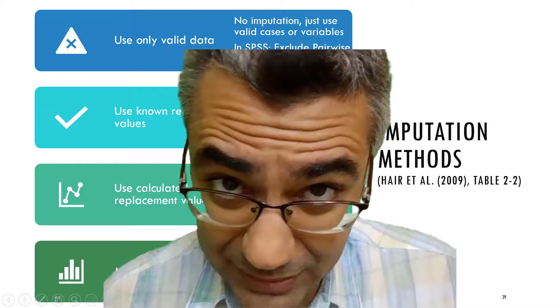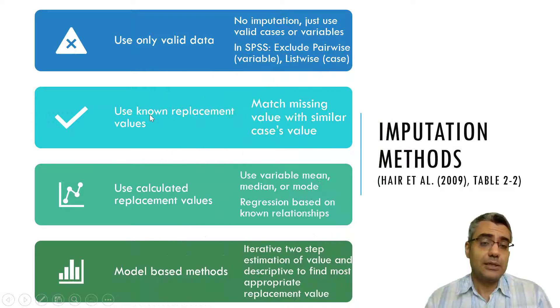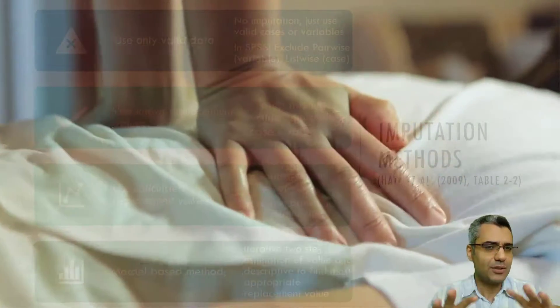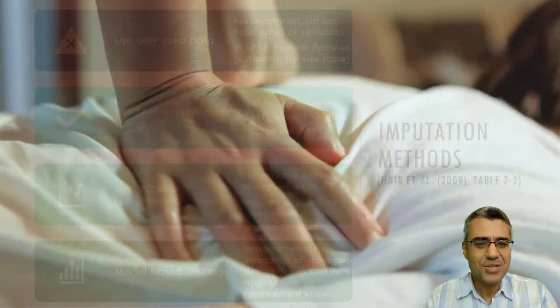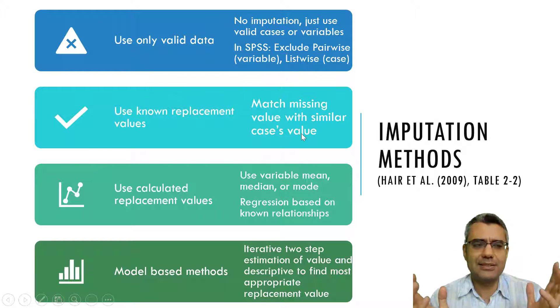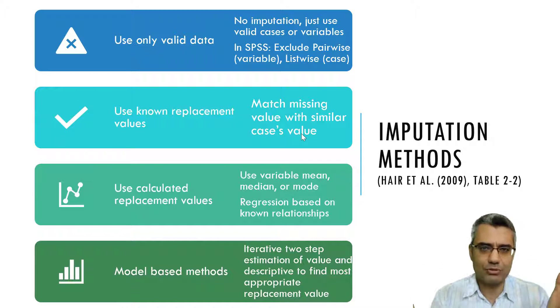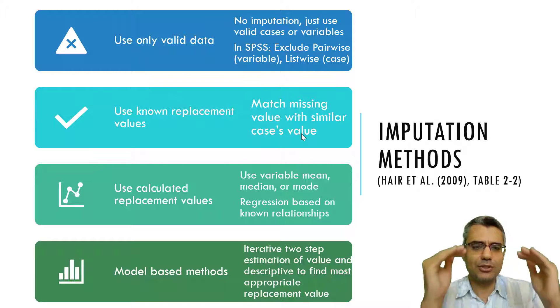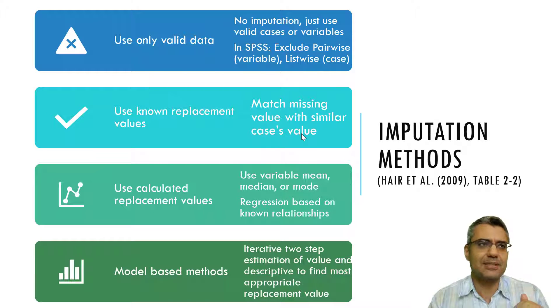The other one I call massaging data. Massaging means matching missing values with similar cases' values. For example, you have a case and Ali's responses to all questions, he has missed one of the questions. Then you check your 300 samples, you find that let's say Alex's profile and answers are very similar to Ali.